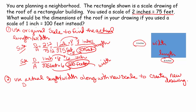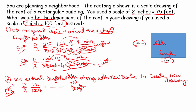Drawing over actual — I'm going to use the new scale. They give me a new scale: 1 inch is 100 feet. I'm going to use my actual length, which is 300 feet. How do I get from 100 to 300? I multiply by 3. So I also multiply the numerator by 3: 1 times 3 is 3 inches. So in my new drawing, the length is going to be 3 inches.